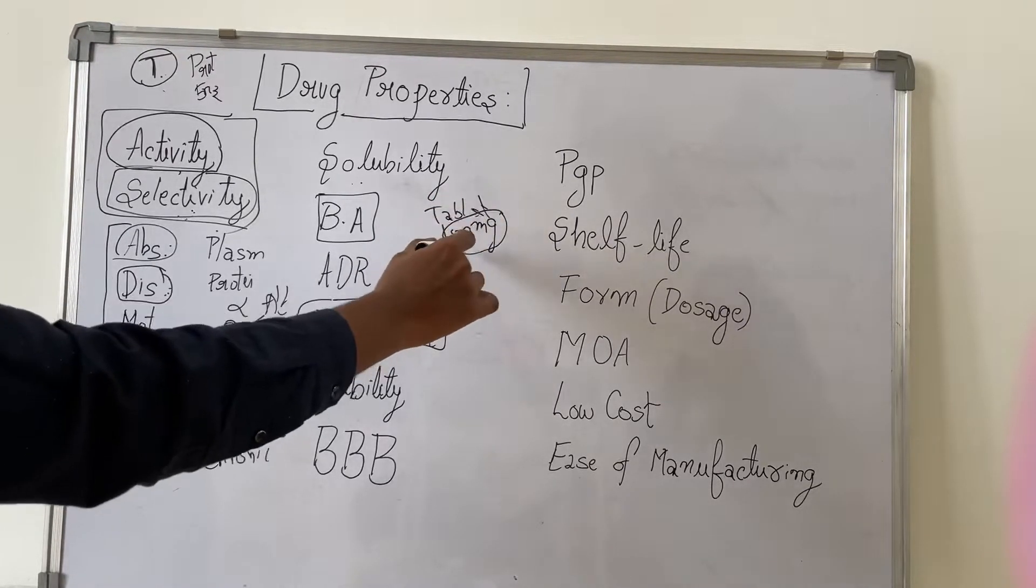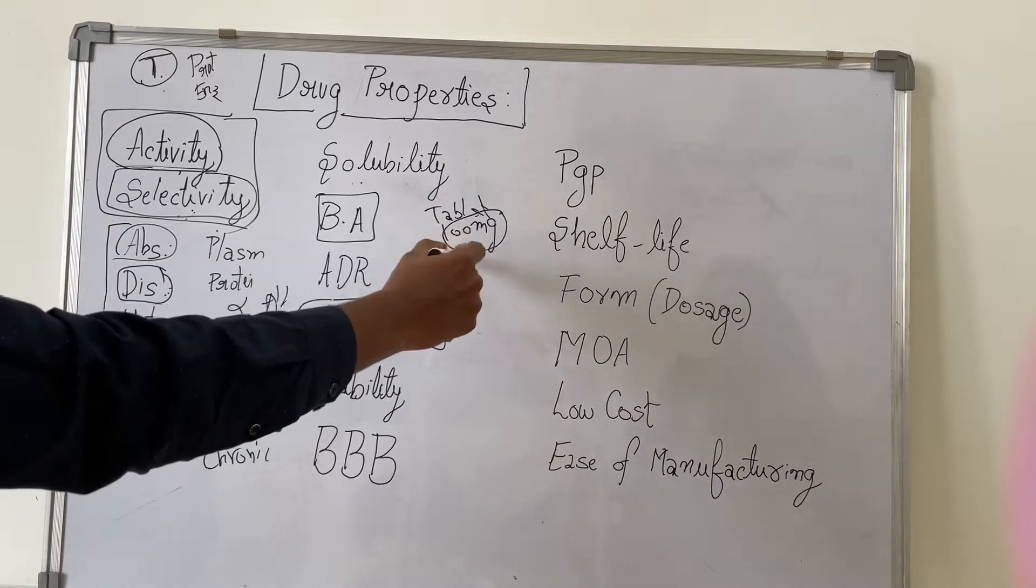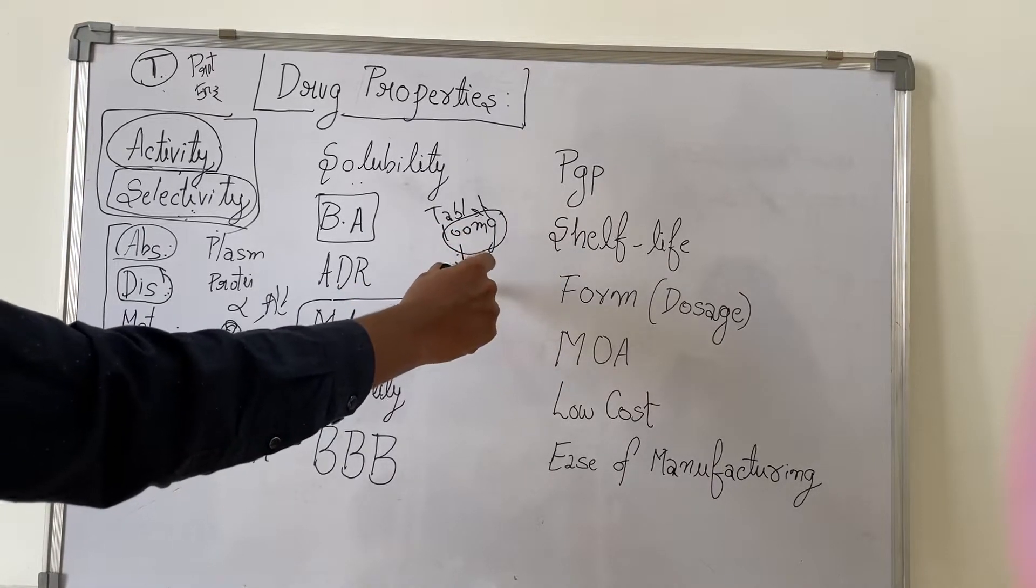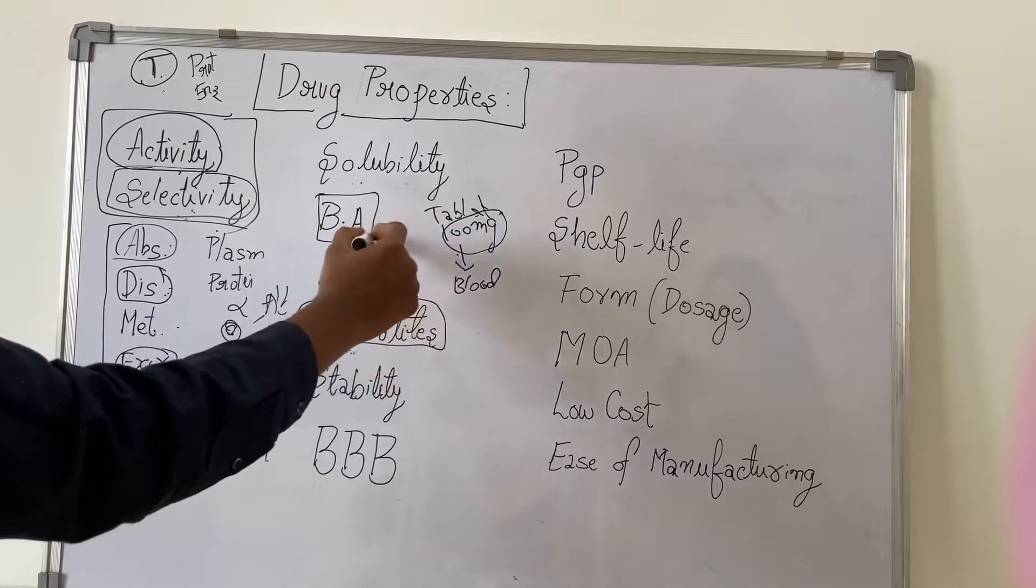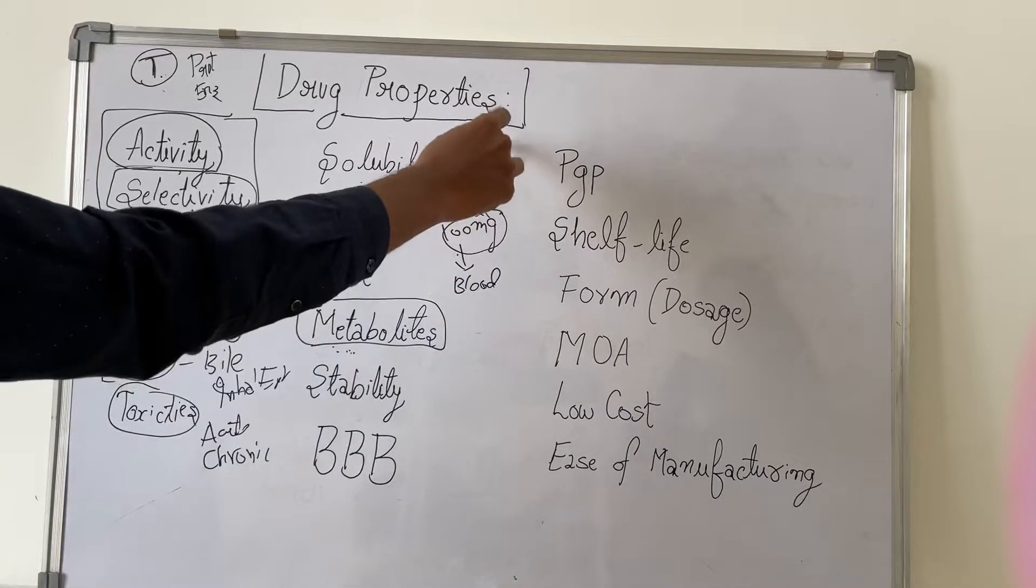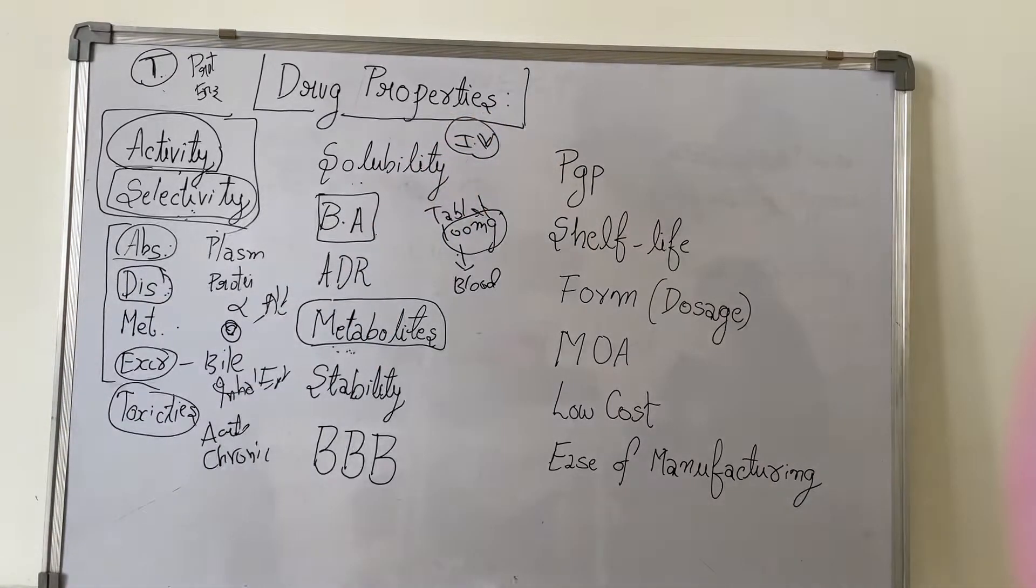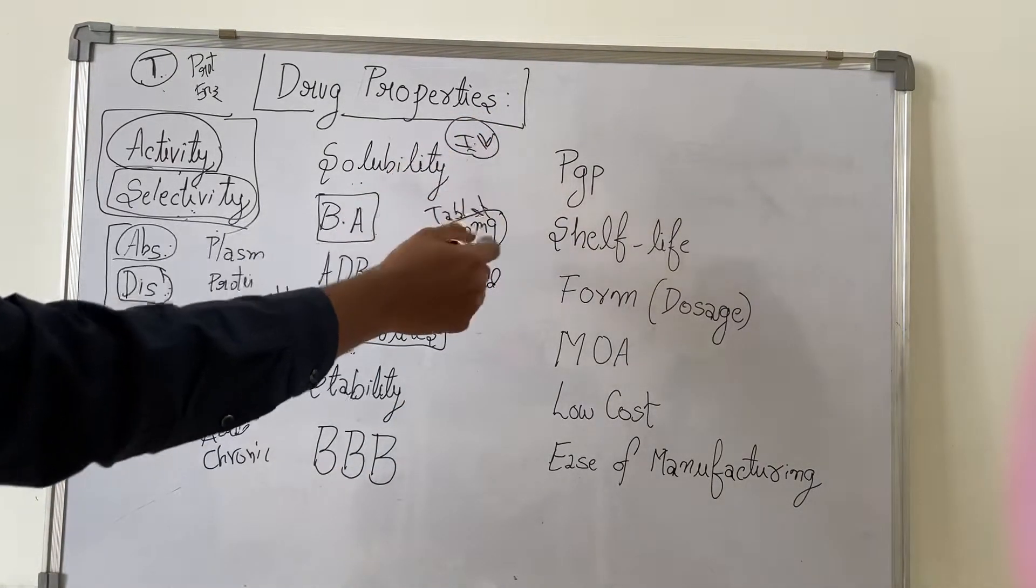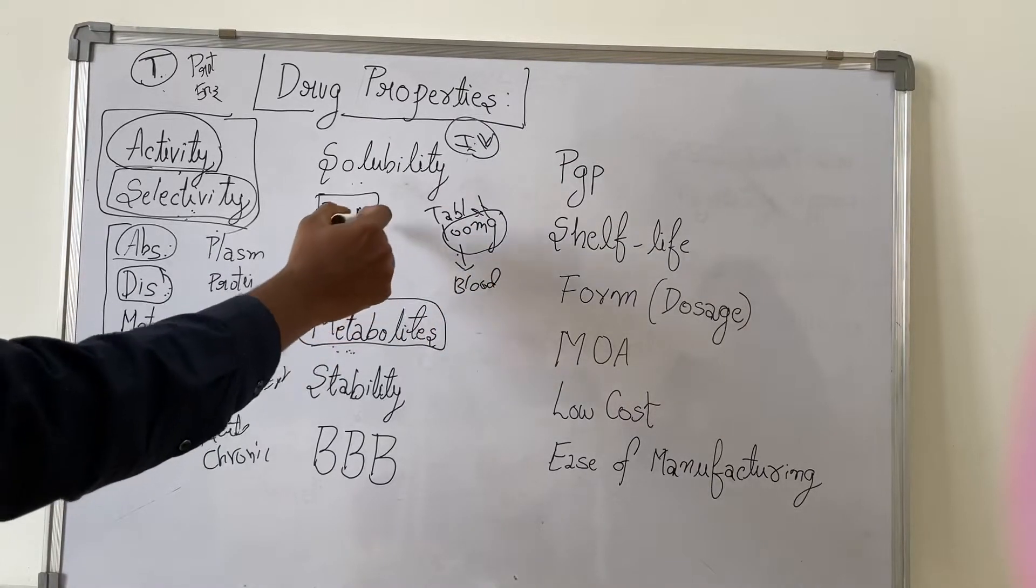For example, if a tablet has been given to the patient containing hundred milligrams of the drug, what is the amount that is actually entering into the blood? This will be considered as bioavailability. For dosage forms like IV, bioavailability will be hundred percent since they are given directly into blood.